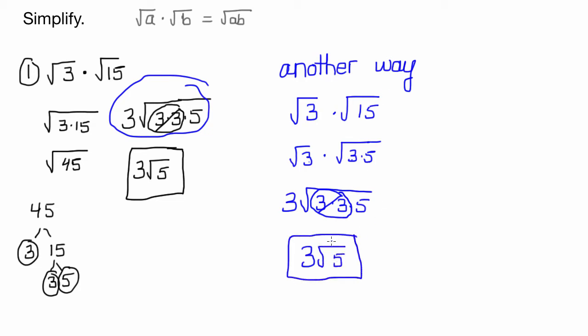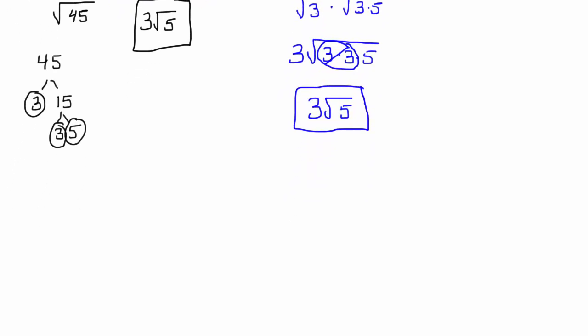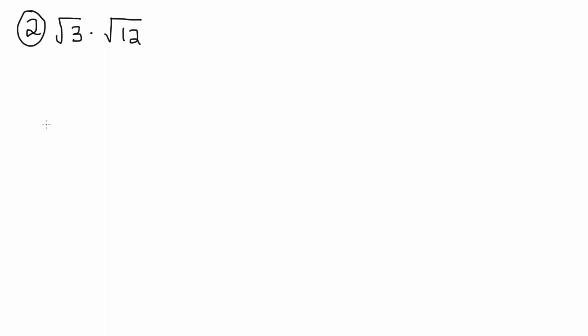I would have taken the blue approach for that problem. Let's try another one. How about the square root of 3 times the square root of 12? If we take the first approach, it's just going to be the square root of 3 times 12, which is the square root of 36, which is 6.